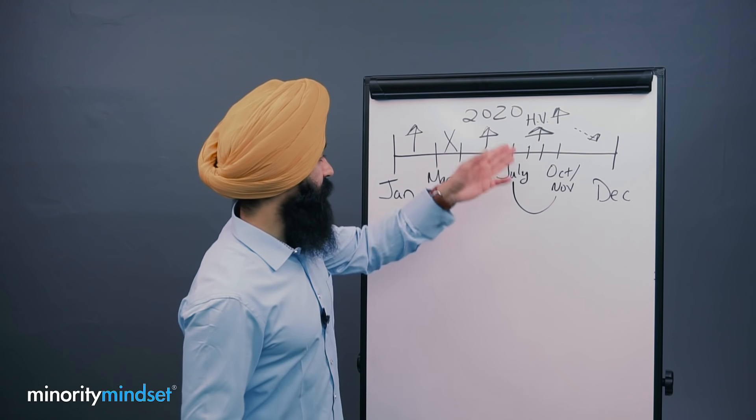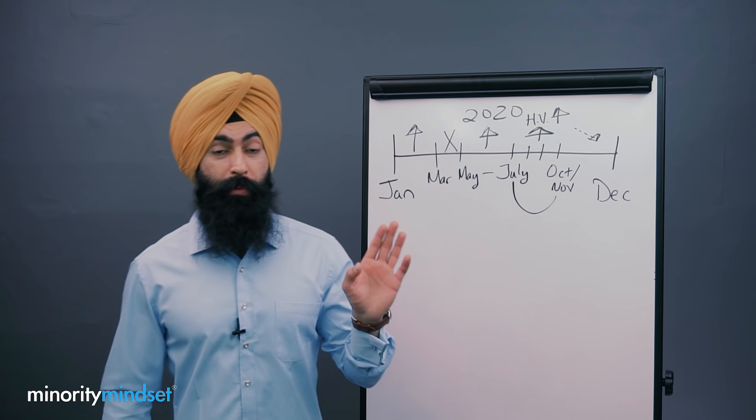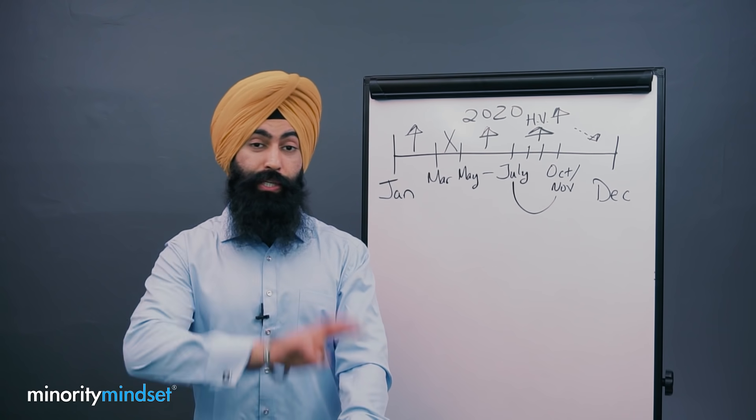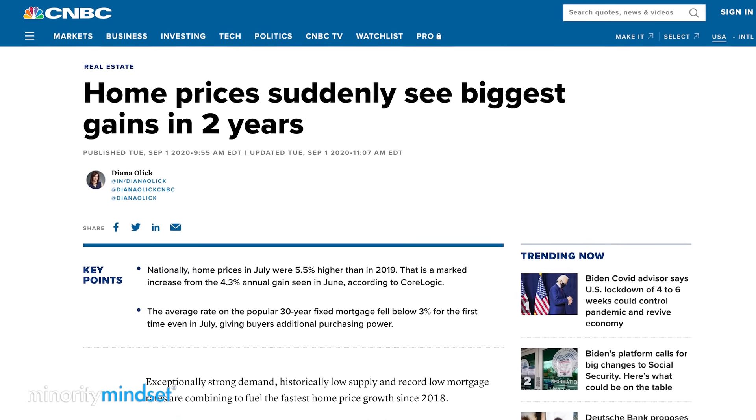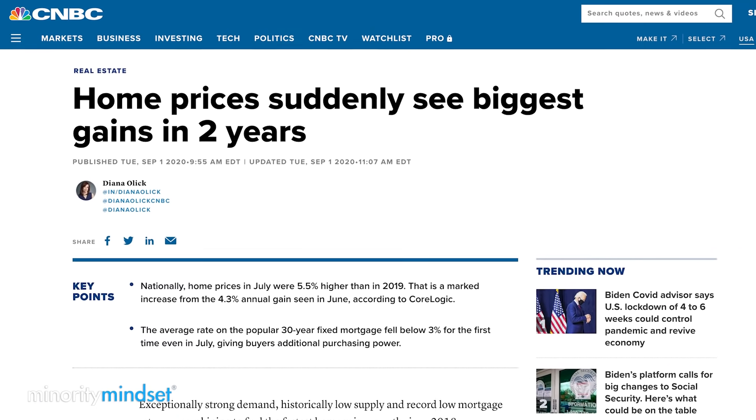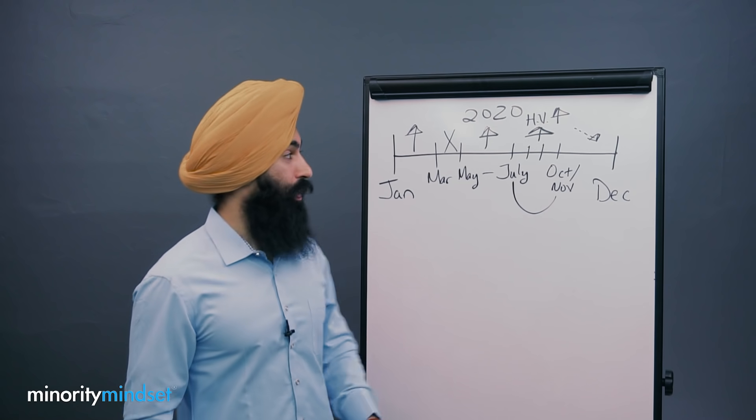And now what had happened during this time when home prices were booming was people would list their homes for sale. And then two days later, they'd have like 14 offers to buy their home. So they'd be like, holy crap, I need to raise the price of my home, the asking price. And so home prices skyrocketed. Sorry. I was just texting my broker telling them to raise the asking price on a home by $30,000.